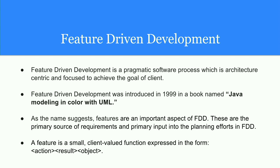Last in the row is feature-driven development — a software development process with feature in the forefront. FDD was introduced in 1999 in a book named 'Java Modeling in Color with UML.' Features are an important aspect of FDD — they are the primary source, similar to user stories in Scrum, used to track things even in the product backlog. A feature is a small client-valued function expressed in the form: action, result, and object.